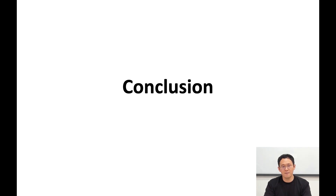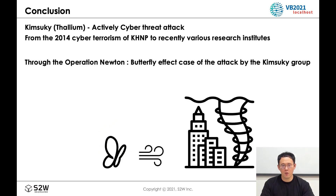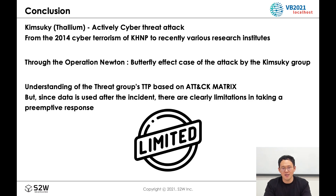Finally, the conclusion. The Kimsuky group is a threat group that has been actively conducting cyber threat attacks from past cyber-terrorism of KHNP to recent attacks on various research institutes. Through the Operation Newton case, we looked at the butterfly effect of attacks by the Kimsuky group, which started with a simple account takeover phishing that many people can easily overlook. A link attached to a simple phishing email could trigger a vulnerability and lead to lateral movement to an internal server by abusing sensitive information in email.